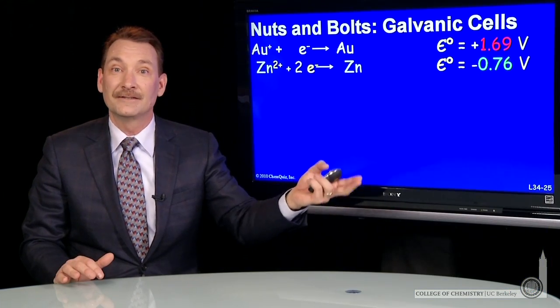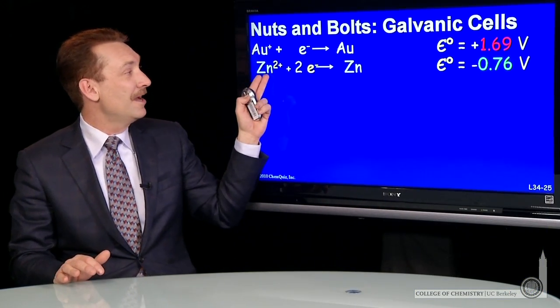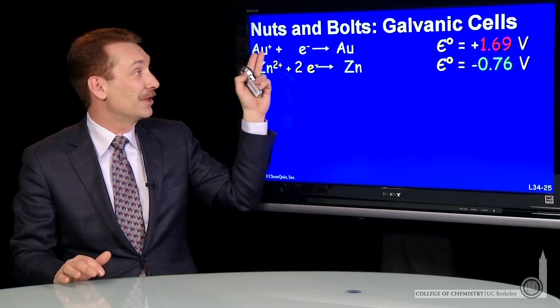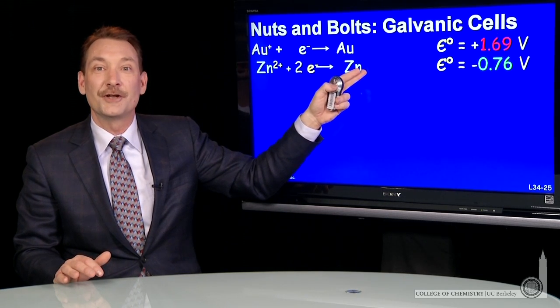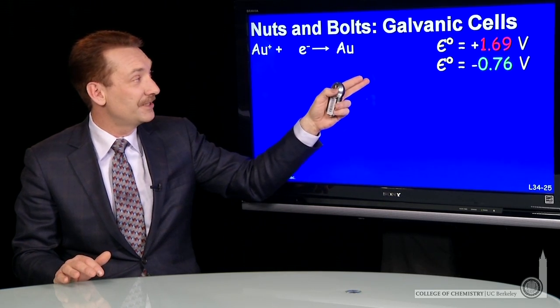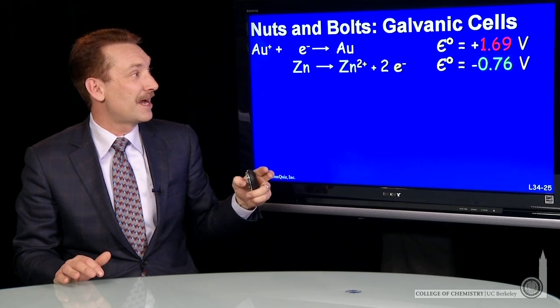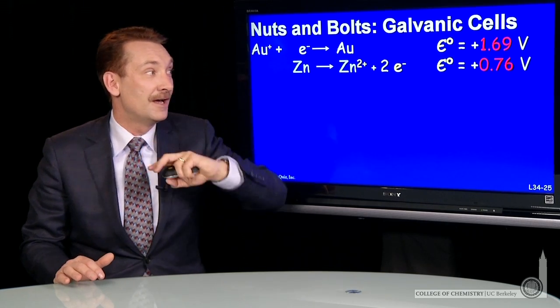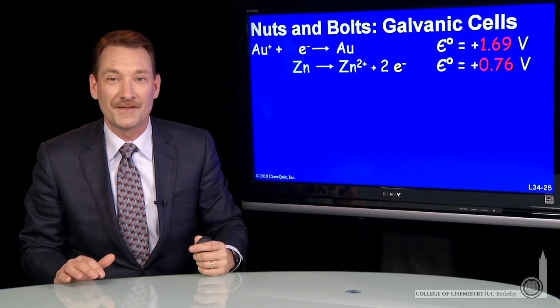And then again, let's look at the overall cell reaction. For the overall reaction, the gold is a reduction. The zinc is going to be an oxidation. So let's reverse that and write it as an oxidation. And when I reverse it, I'll change the sign of the potential.